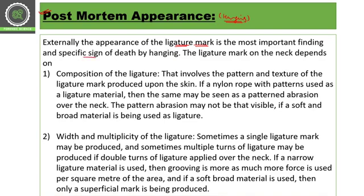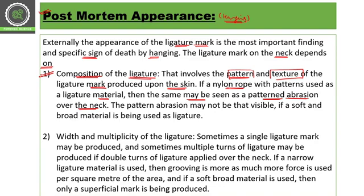The ligature mark is a really important and specific sign of death by hanging. The ligature mark on the neck depends on multiple factors. The first factor is the composition of the ligature — the composition determines the pattern and texture of the mark produced on the skin. If a nylon rope with a pattern is used, the same pattern may be seen as an abrasion over the neck. If a soft and broad material is used, the pattern may not be as visible.